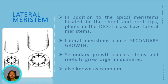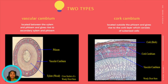Lateral meristem causes secondary growth. Secondary growth causes stems and roots to grow larger in diameter. Woody plants also have lateral meristem, which produce cells that thicken a stem or root. When the cells divide, they typically produce tissues to both the inside and outside of the meristem. Lateral meristem is also known as cambium. Wood and bark are tissues that arise from secondary growth, originating at two types of lateral meristem: the vascular cambium and the cork cambium.